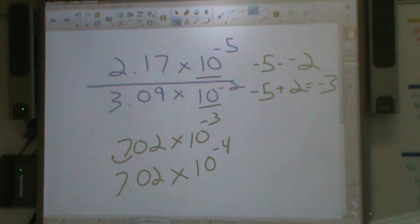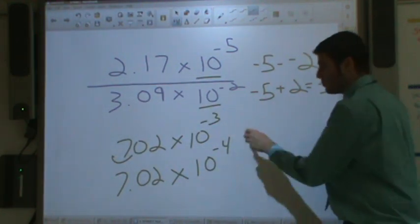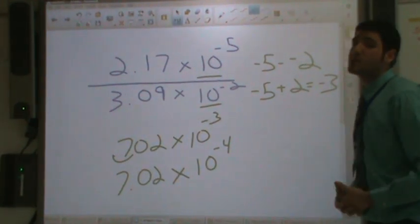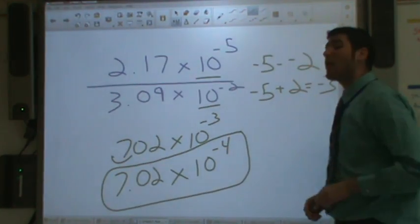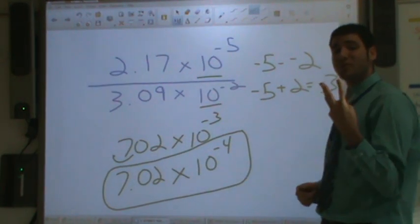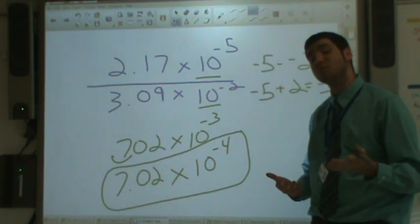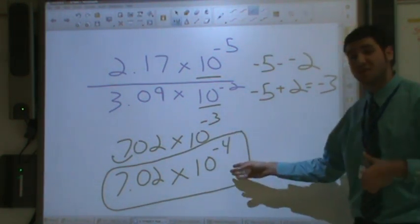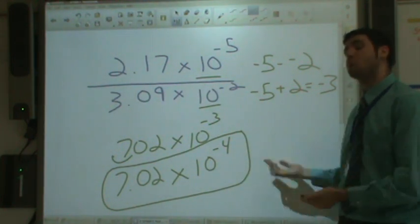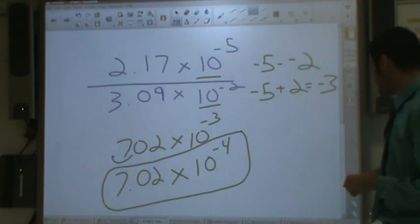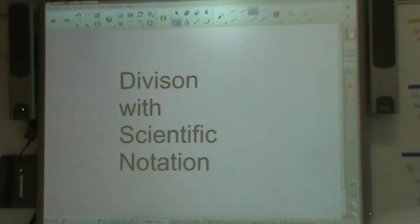So 7.02 times 10 to the negative four. Now technically these are the same answers, but this one is our correct answer because it is written in proper scientific notation. How do we know? Is this a number between 1 and 10? Absolutely. 7.02 is between 1 and 10. Do we have a base of 10? Absolutely. We have a base of 10 and an exponent. We are good. This is proper scientific notation and this has been a lesson on division with scientific notation. Cut.